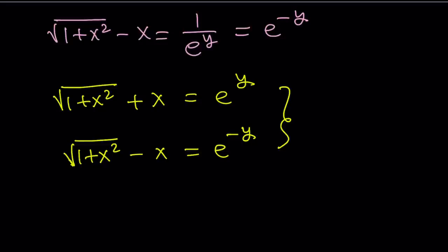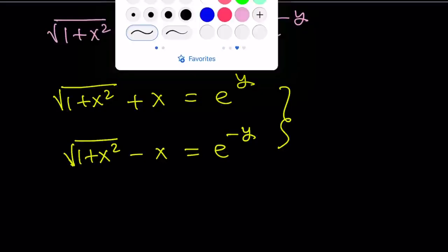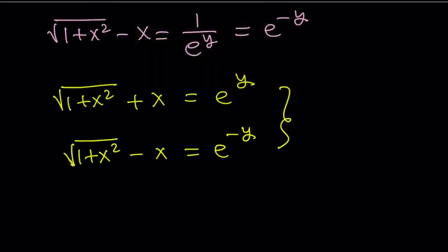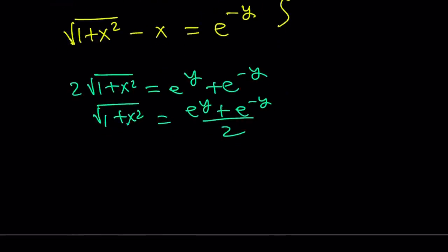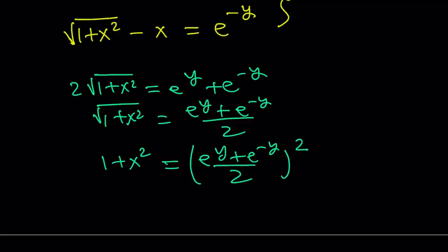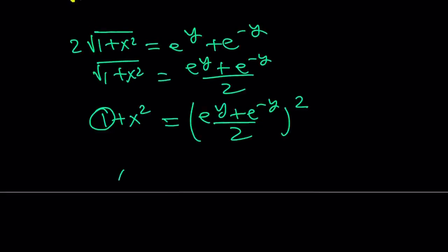I can go ahead and add both of these equations — that's definitely a method, though not the best approach in my opinion. If you add these two equations you're going to get 2 times the square root of 1 plus x squared, and on the right-hand side you get e to the power y plus e to the power negative y. You can divide both sides by 2, giving you a radical, and then square both sides to solve for x. You'd then subtract 1 from both sides, do some algebraic manipulation, and eventually square root both sides. But this is not better than the next approach.